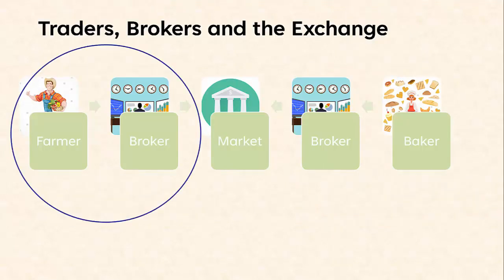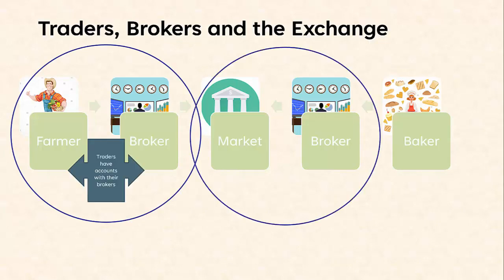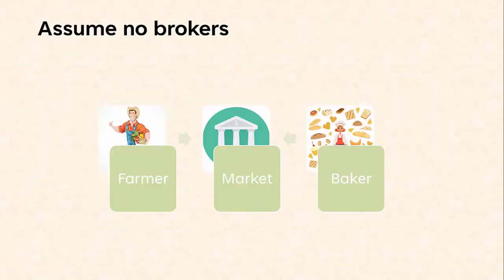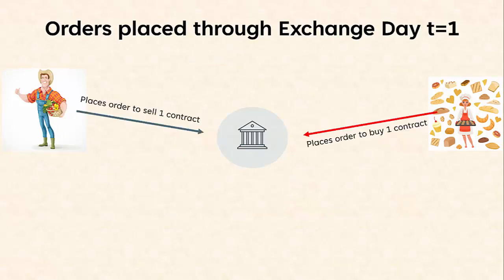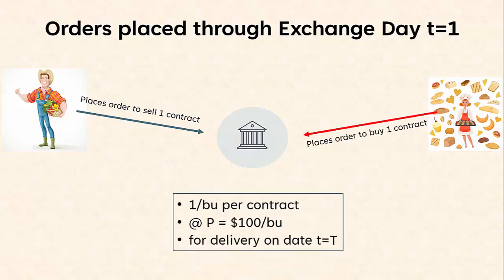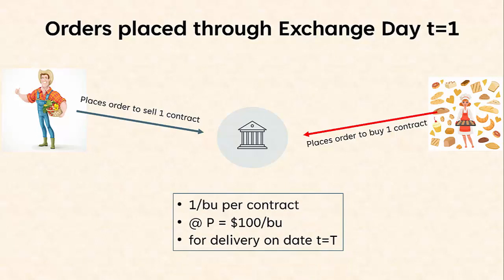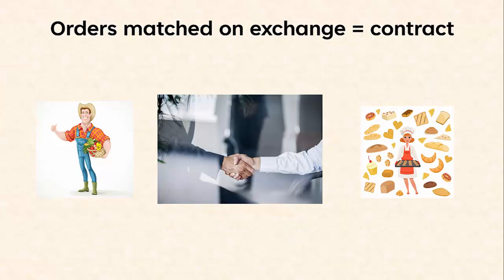In reality, each trader would trade through a broker who was, in turn, a member of the Futures Exchange and its affiliated Clearinghouse. In this example, we'll act as if the traders engage with the Exchange directly. We'll assume that the farmer places an order to sell one wheat futures contract, and the baker places an order to buy one wheat futures contract. Assume that the contract is for one bushel at a price of $100 for delivery on date T. Once their orders are matched by the exchange, the two traders have a legally binding obligation to each other to deliver or take delivery of the underlying asset at the agreed futures price of $100.